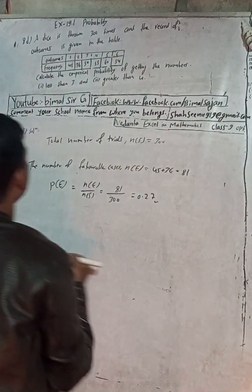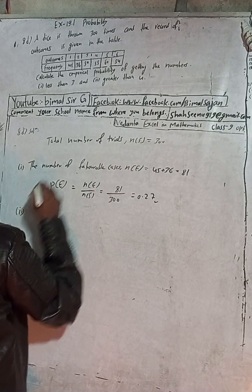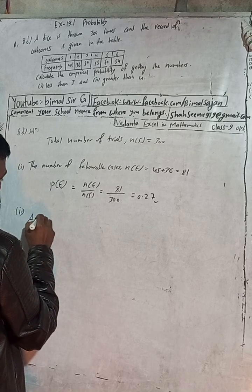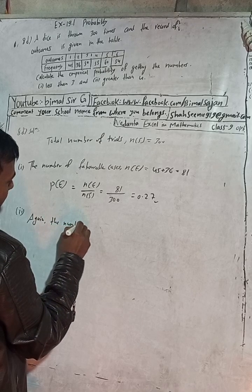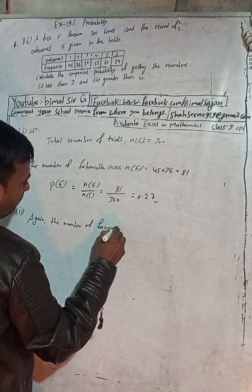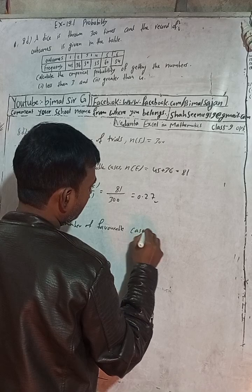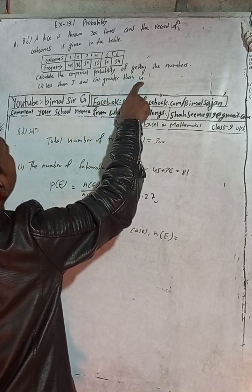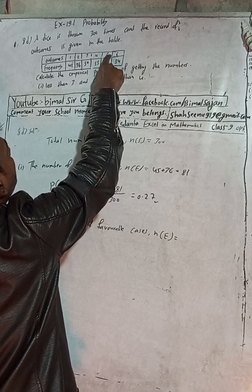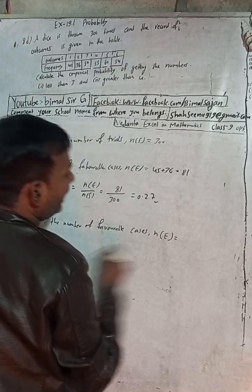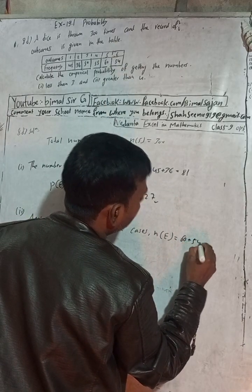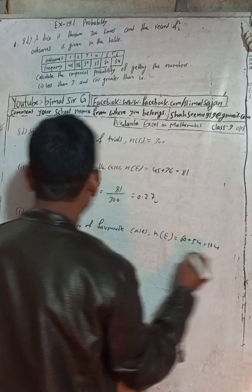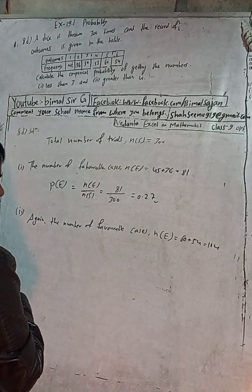Part (b): getting a number greater than 4. Numbers greater than 4 are 5 and 6. So the number of favorable cases n(E): the count for 5 is 60 and for 6 is 54. So 60 plus 54 equals 114. Therefore n(E) = 114.